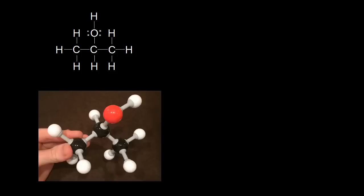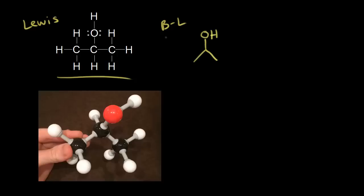In the video on bond line structures, we started with this Lewis dot structure on the left, and I showed you how to turn this Lewis dot structure into a bond line structure. Bond line structures contain the same information as a Lewis dot structure, but it's much faster to draw the bond line structure than the full Lewis dot structure.